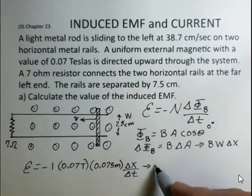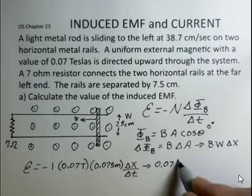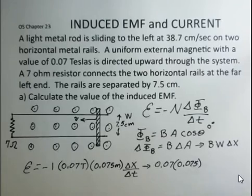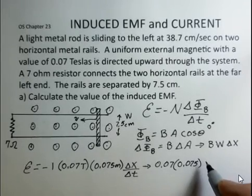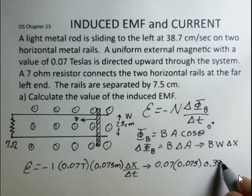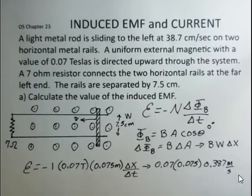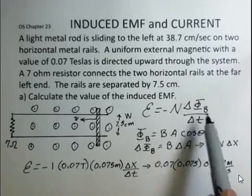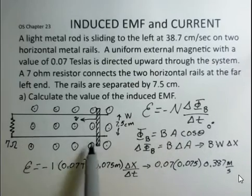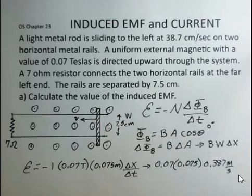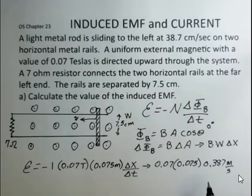So the EMF, the magnitude of the EMF is going to be 0.07 times 0.075 for the width, and then I bring in the speed, so 0.387 meters per second. We've formulated Faraday's law now for the case of N of 1. We've deduced what the delta magnetic flux over delta t would be.